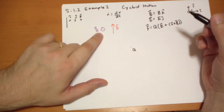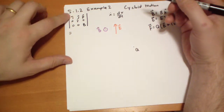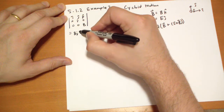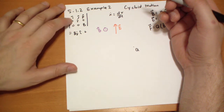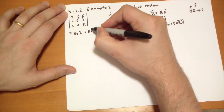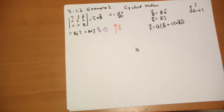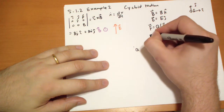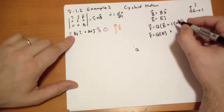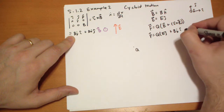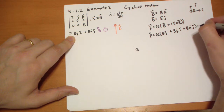The V vector is pointing in the k-hat direction, so the cross product gives us B·y-dot in the i-hat direction, minus B·x-dot in the j-hat direction. That's V cross B. Substituting all that in: the E vector is E in the j-hat direction, plus B·y-dot in the i-hat direction, plus B·x-dot in the j-hat direction, and that equals mass times acceleration.